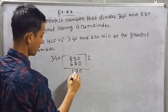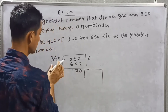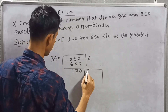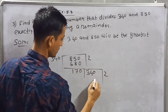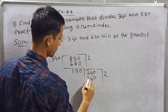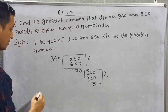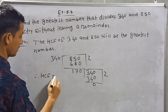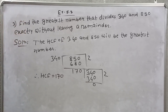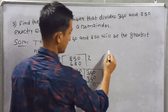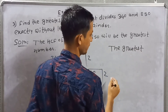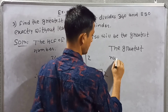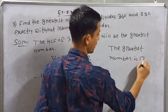Now 340 divided by 170: 170 goes 2 times exactly, remainder is 0. The divisor becomes the new dividend. Therefore HCF is equal to 170. So the greatest number is 170.